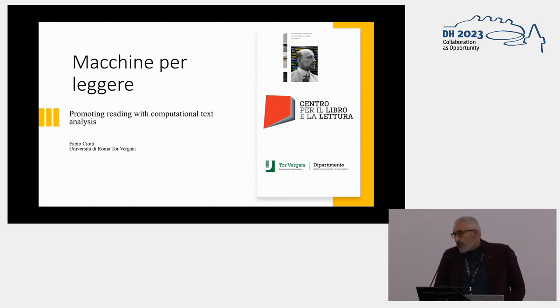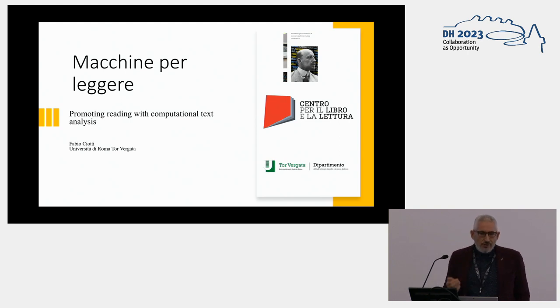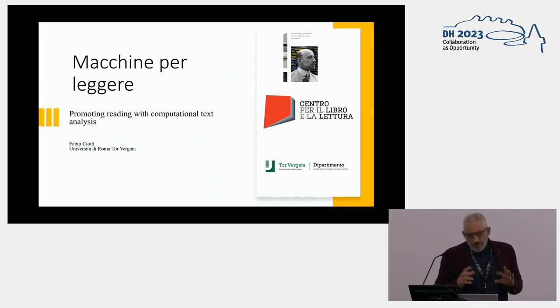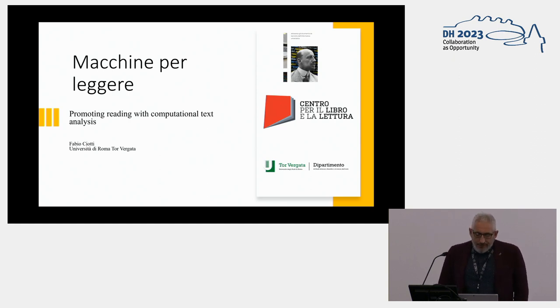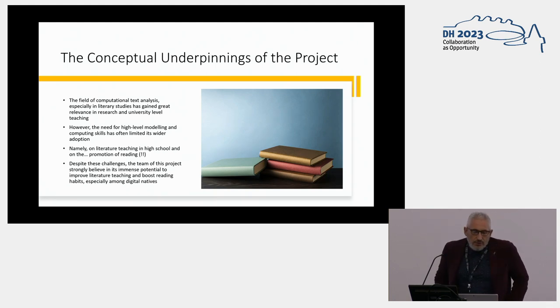Thank you for this. I'm a professor of theory of literature and computational studies at the University of Roma Torvirgata, but doing many different things. I'm going back from the level of research and abstraction we've been hearing so far. I'm connected with the project that Jennifer and Vera were presenting before, as I'm presenting a small project applying computational text analysis — a field that has been growing a lot and has great relevance in traditional literary criticism and theory.